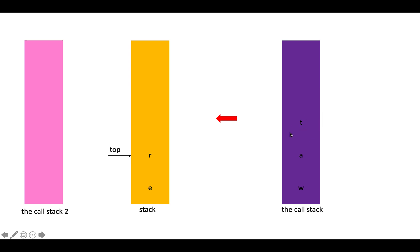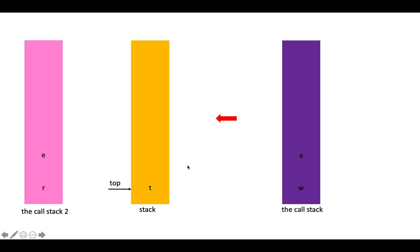Then we deal with element T and insert it at the bottom of our stack. We pop R and E into cross stack 2. Since the stack is now empty, we push T at the bottom. Then we push E and R back onto the stack one by one, giving us a stack with R on top, then E, then T at the bottom.